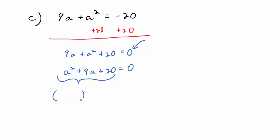So write down two parentheses. Don't forget the equals zero — leave that in there. What do the first multipliers have to be? A and A. It's a 1 in front of the a squared, and that's good news because it's very systematic. You look for two numbers whose product is 20 and whose sum is 9. Everything's positive, so those numbers are 4 and 5.